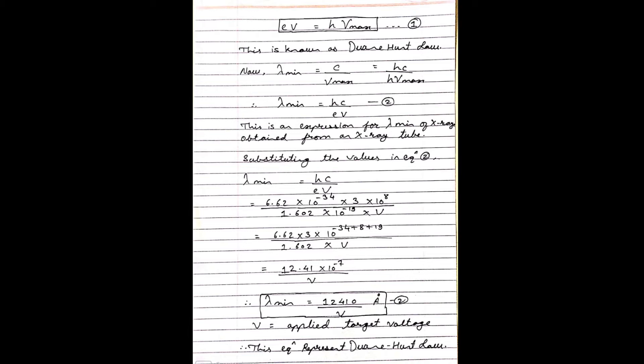Now we can simplify it more. Lambda minimum is equal to C upon nu max, as we seen earlier. Therefore, lambda minimum is equal to hC upon eV electron volt. This is an expression for lambda minimum of x-rays obtained from an x-ray tube.